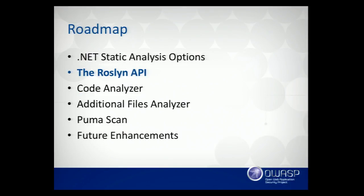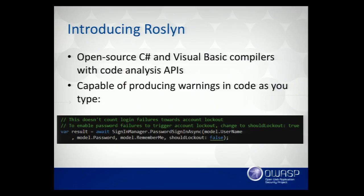The next section: the Roslyn API. Has everybody heard of Roslyn? What Microsoft did — and the revolution happening over there is pretty cool — is open source their compiler APIs. All of the code running in the framework for years is now on GitHub. Now we can call those compiler APIs directly.